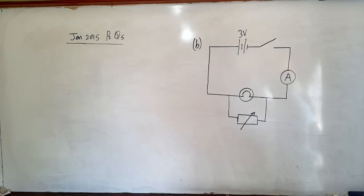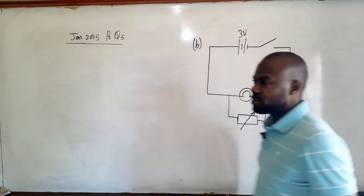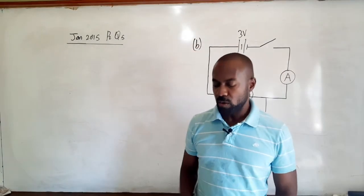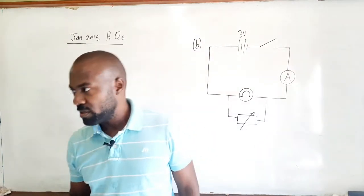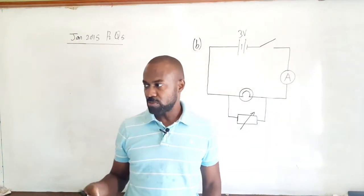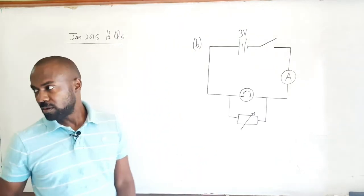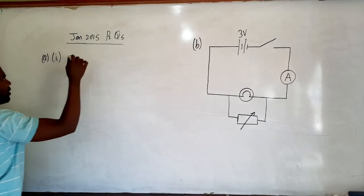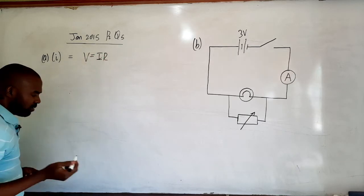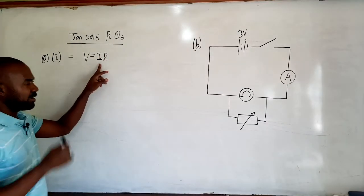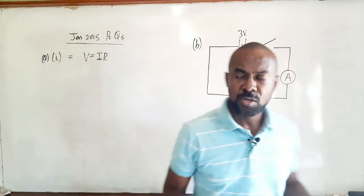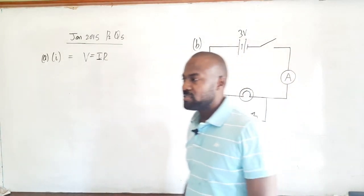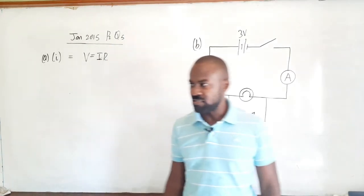Part A1 says: state the formula that relates the potential difference across a metallic conductor at constant temperature to the current through it. So they basically want us to state the formula which relates the PD or voltage to the current. The formula is V equals IR. This relates the potential difference V across a metallic conductor to the current I when the temperature of the conductor is constant.